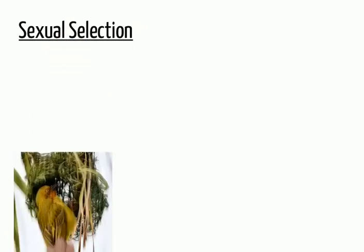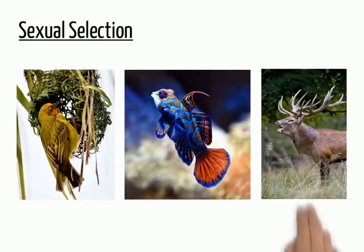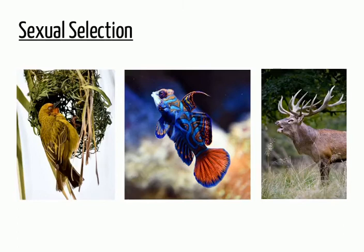Sexual selection is the idea that the evolutionary hurdles which an organism must overcome don't just come from factors in the natural environment — such as access to food or the ability to evade predation — but also come from the predilections of potential mating partners. These sexual preferences, Darwin proposed, can result in the evolution of sexually selected traits such as skillful nest building, decorative appearance, and flamboyant visual or vocal displays.